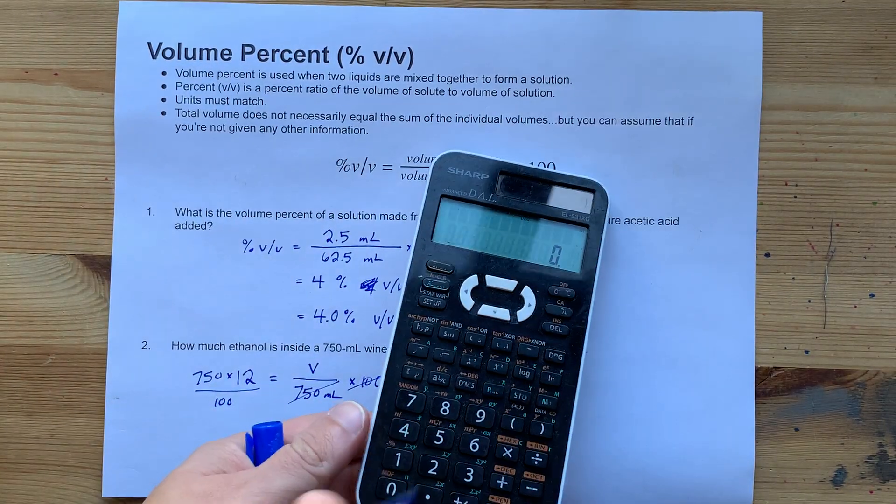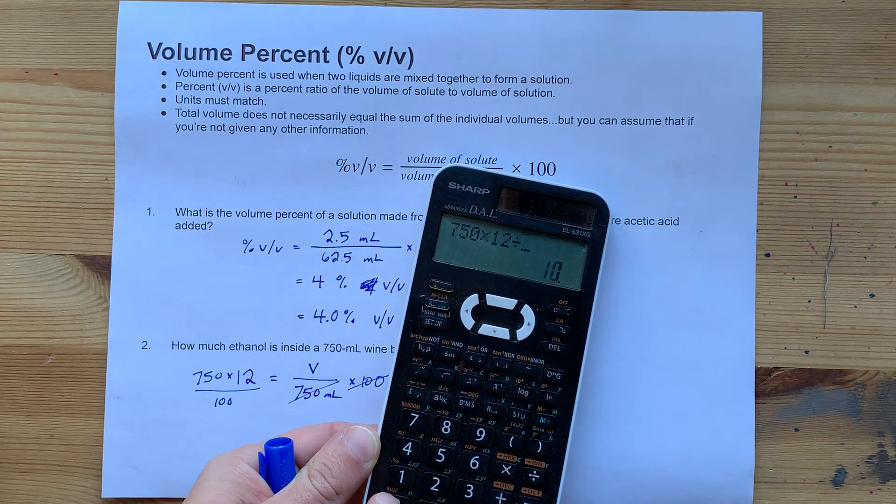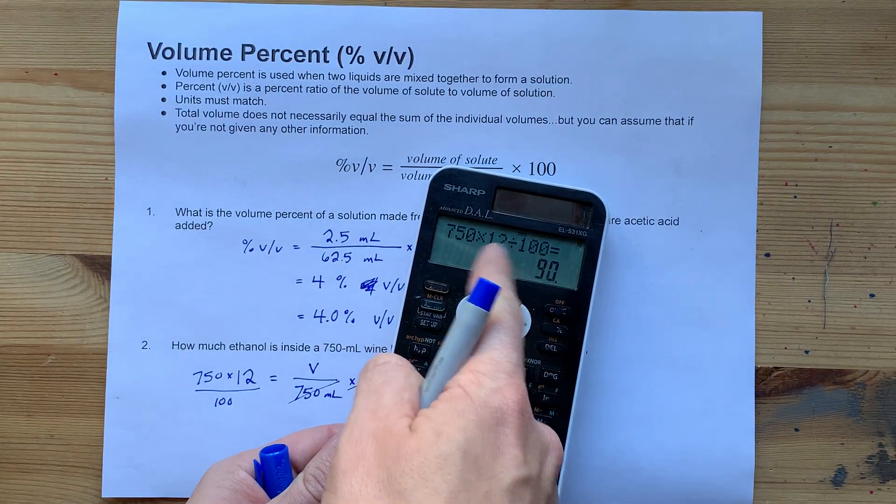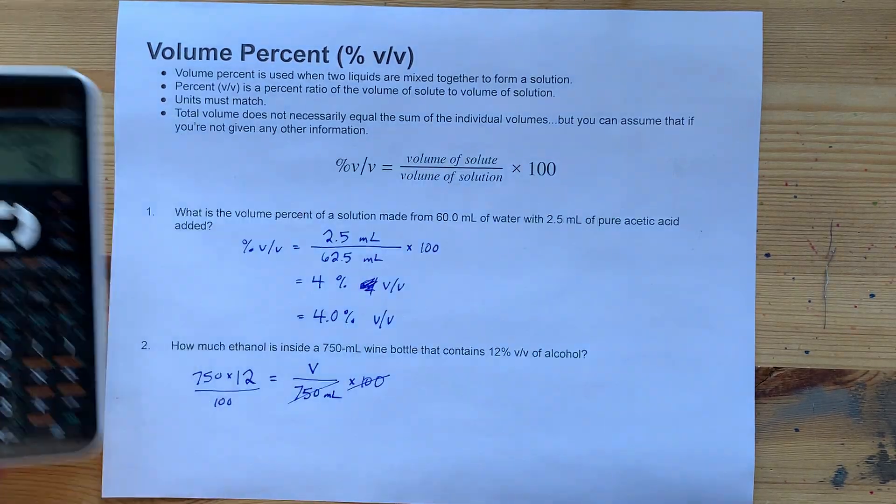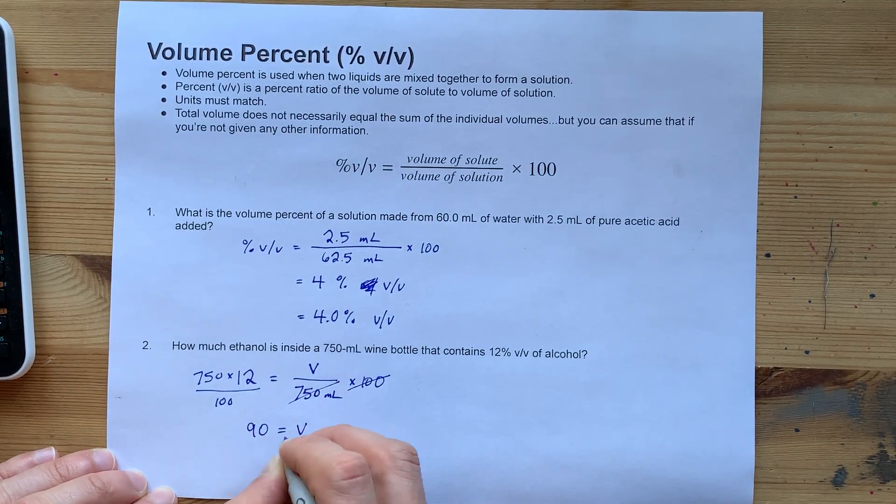Let's do the math there. That's 750 times 12 divided by 100. Put it another way, it's 12 percent of 750. That turns out to be 90 is my volume, and that's in milliliters.